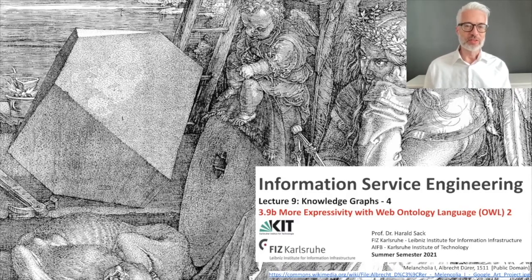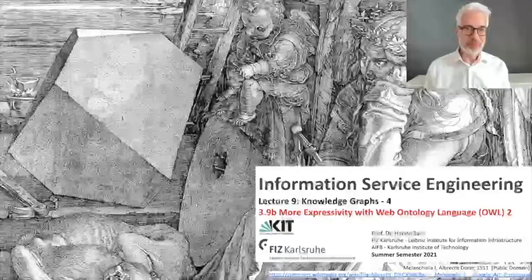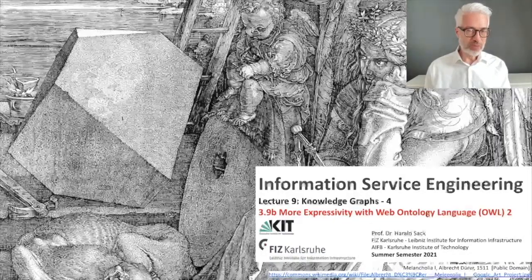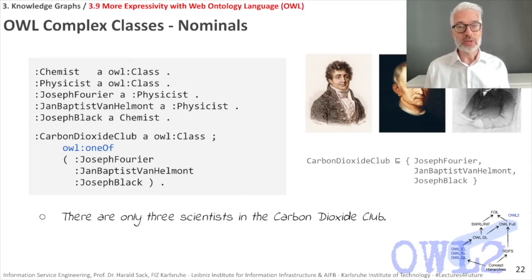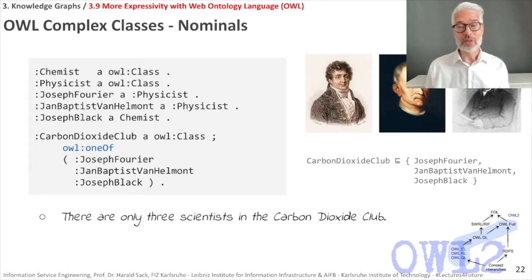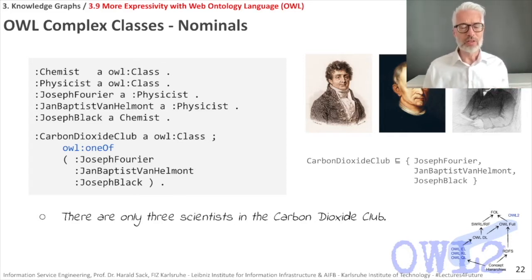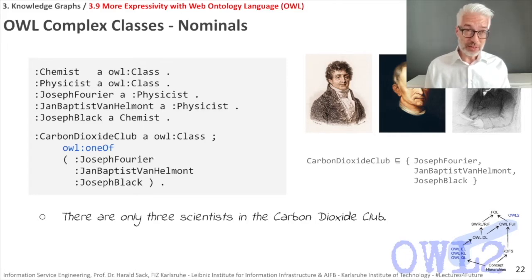Welcome back to Information Service Engineering, lecture number nine: Knowledge Graphs, part four. In this section we are going to continue our journey with the Web Ontology Language OWL. We have already learned about how to define classes, data type properties, object properties, and individuals. Now let's come back to classes and put in more semantics.